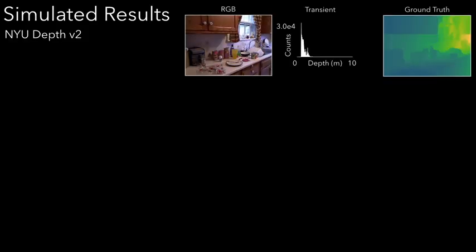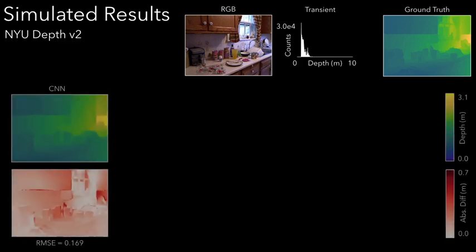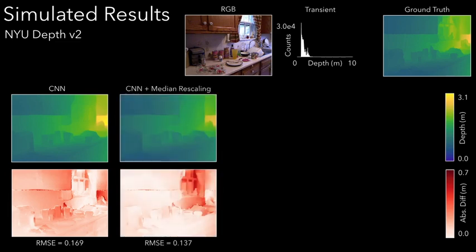We simulate a SPAD transient using the ground truth RGB and depth images. In this example, a conventional monocular depth estimator gets the depth order incorrect, but scales the depths incorrectly. Global rescaling to match the ground truth median reduces RMSE, but shifts the problem region to the window.